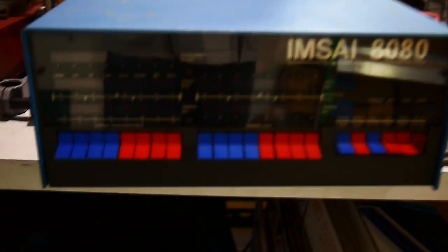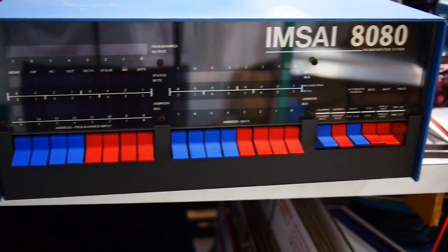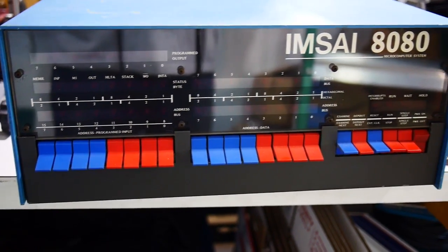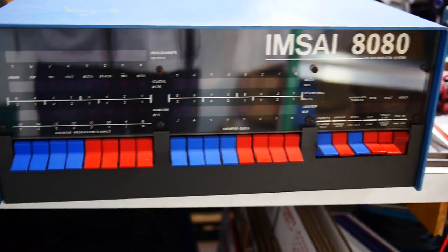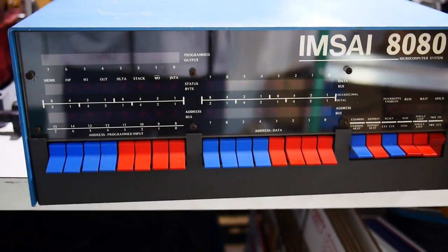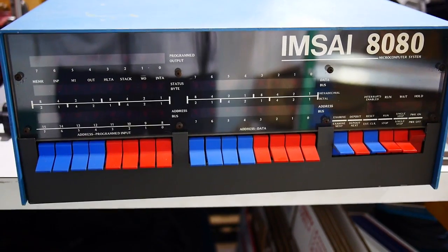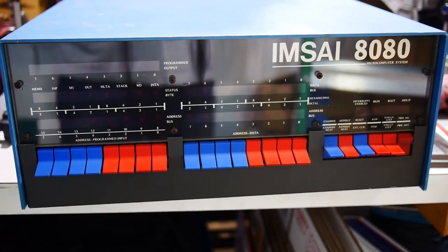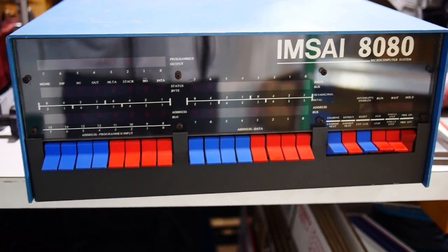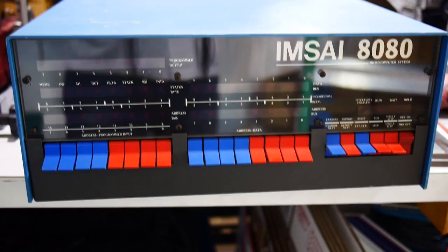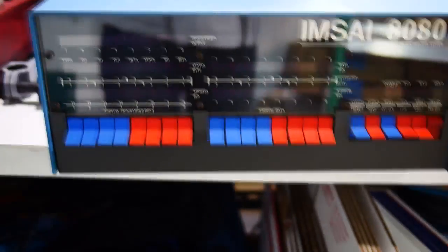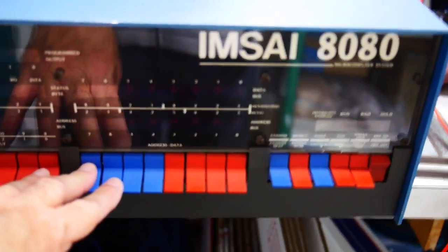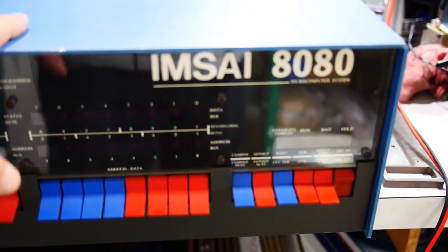If people haven't seen an MSci 8080, it's the one that was in the movies — War Games — and it has the front panel switches. It was basically the second computer. The Altair was first and then the MSci. The Altair was kind of a hobbyist machine; the MSci was really meant for commercial application. I think a lot of people have seen the outside and maybe thrown the switches, but I don't think many people have seen the inside. So let's go there.